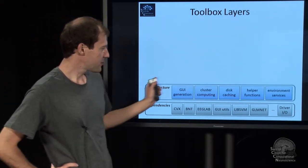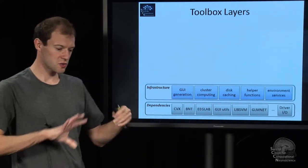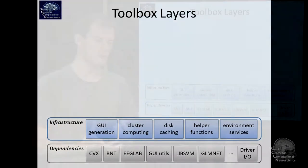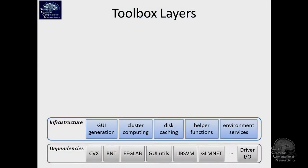Then on top of that, the blue stuff is what's really developed as part of BCILab. What's on top of that is some infrastructure that is available for people who create methods or is being used in the implementations of the various methods. There's stuff to auto-generate graphical user interfaces, for example, to do cluster computation, which is important if you want to run things at large scale.